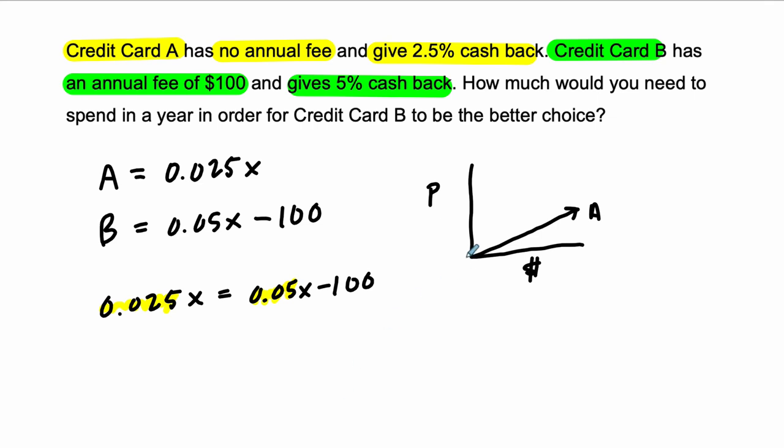But B kind of starts lower. Remember that the linear equation, the y-intercept, it starts down here and it comes up. Eventually, it's a steeper slope. It's going to cross. So it starts down at negative 100. We're finding where they're equal to each other. That's this point right here. After that amount, the more we spend, the better B is because you get the higher percentage back. So I'm thinking of linear equations, and we're solving for x.